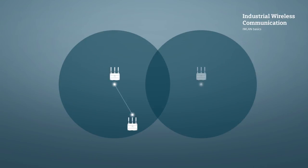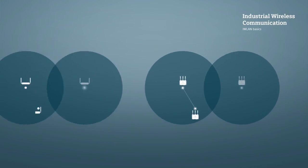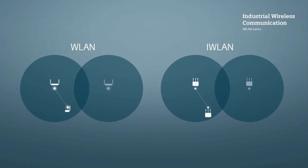Roaming, as in the passing on of clients between various access points, is also part of the range of functions of Industrial Wireless LAN. Roaming takes place during data traffic. With Industrial Wireless LAN, roaming times are 10 to 100 times faster than those achieved with normal wireless LAN.